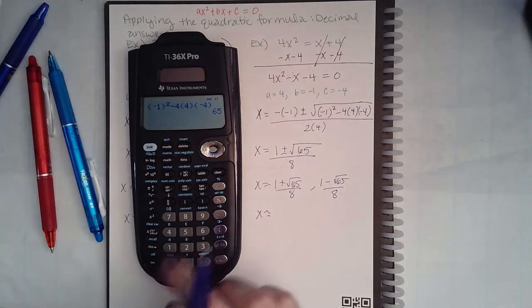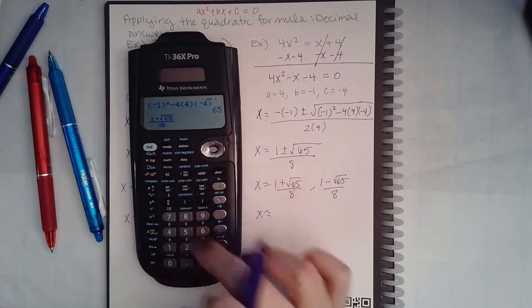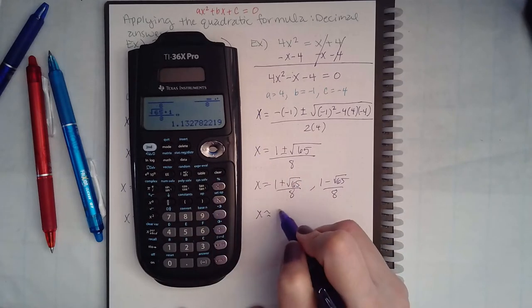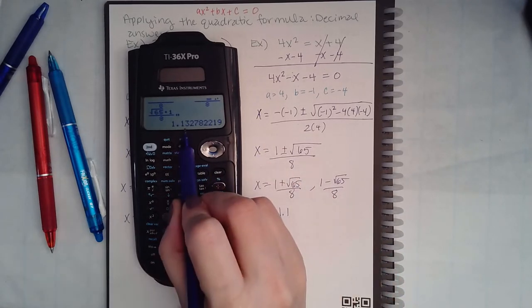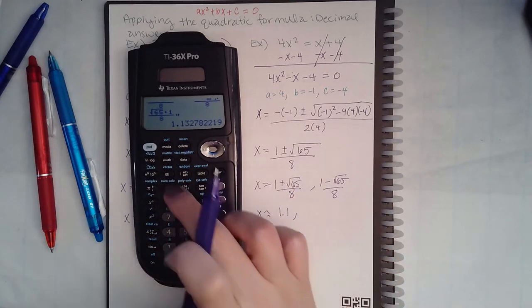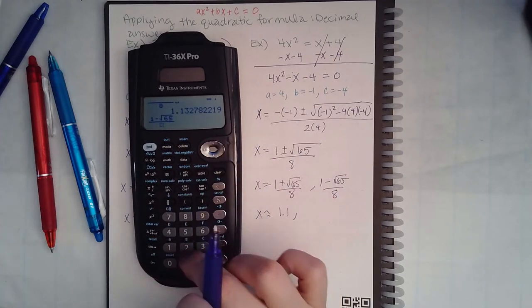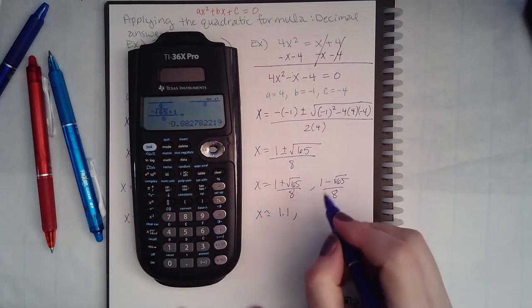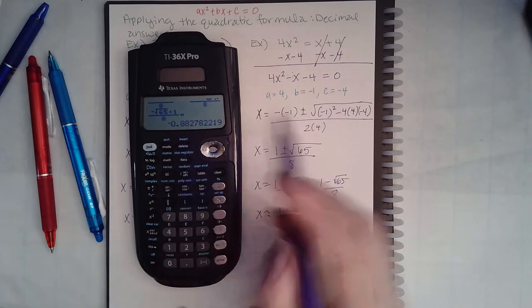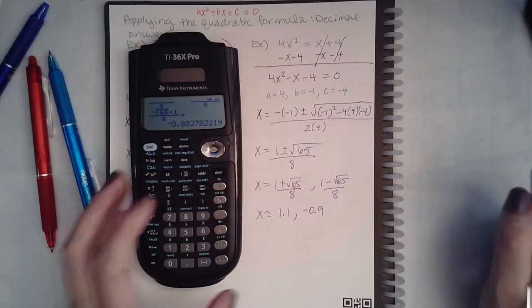Let's put that in the calculator. We get 1.1, and this gives us negative 0.9. Not too bad.